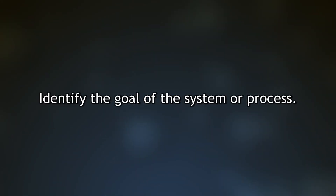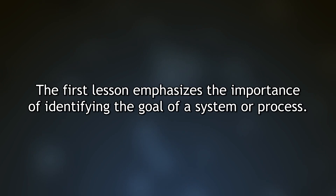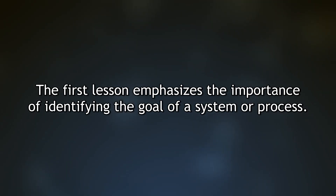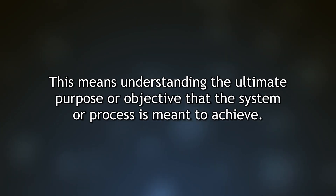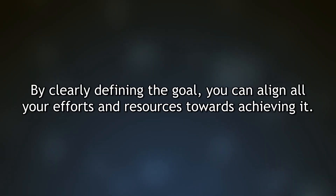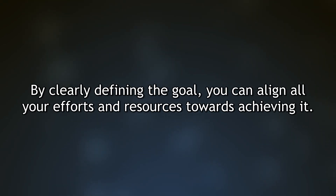Lesson 1: Identify the goal of the system or process. The first lesson emphasizes the importance of identifying the goal of a system or process — understanding the ultimate purpose or objective that the system is meant to achieve. By clearly defining the goal, you can align all your efforts and resources towards achieving it.